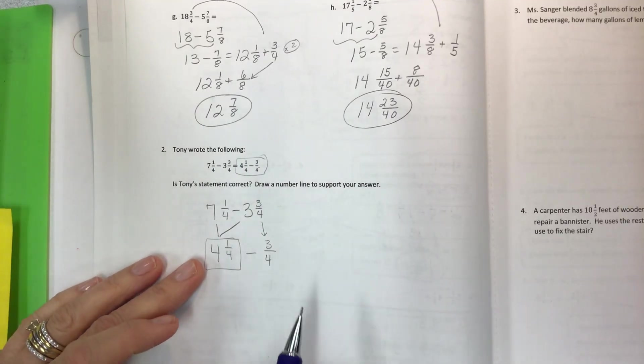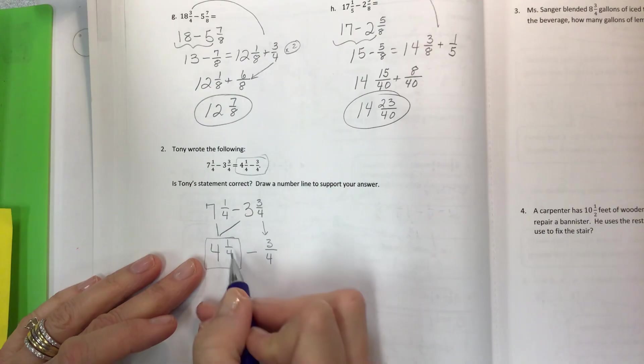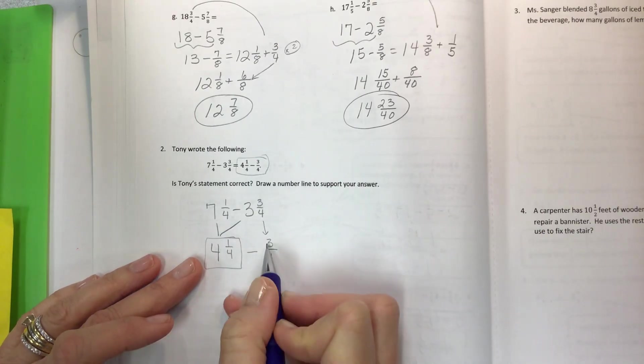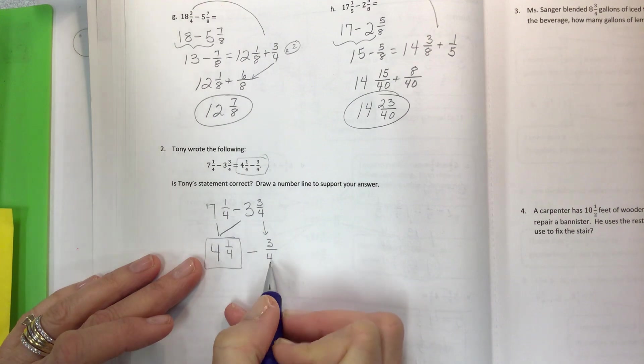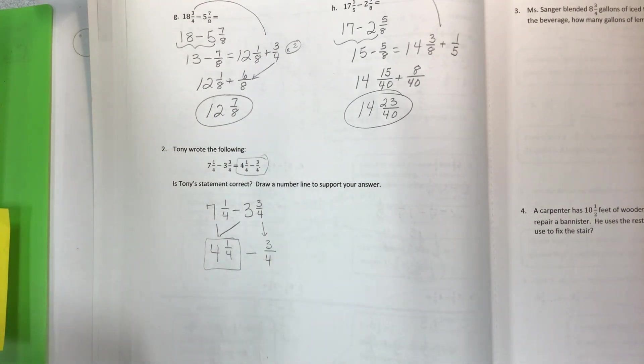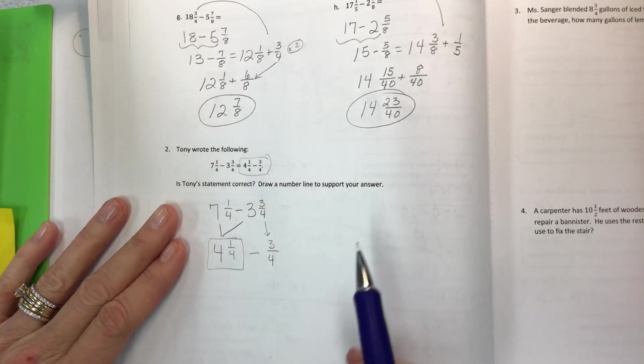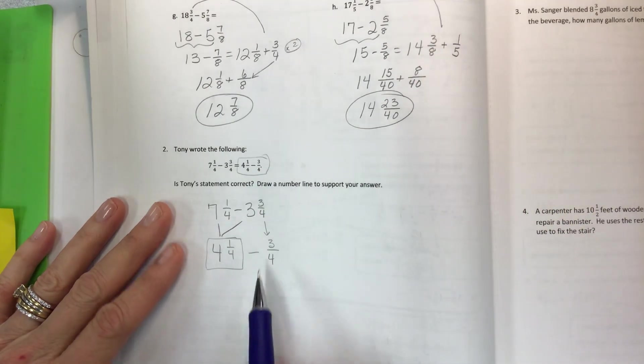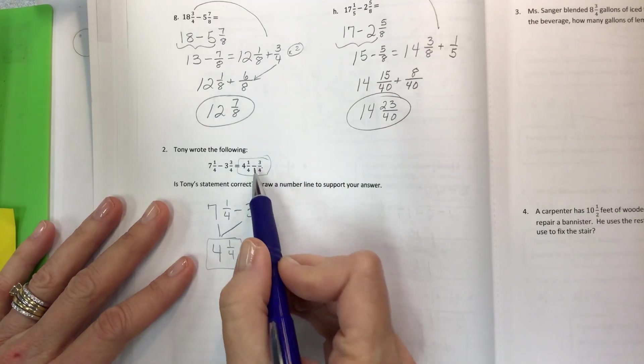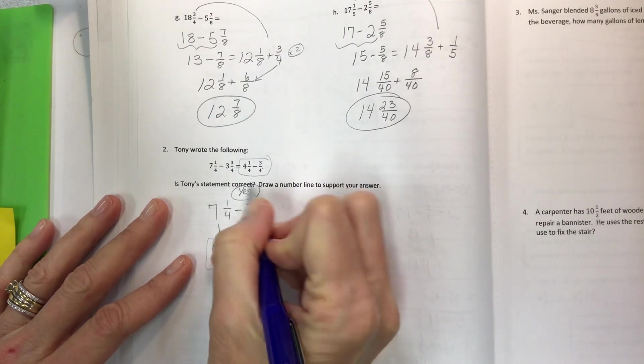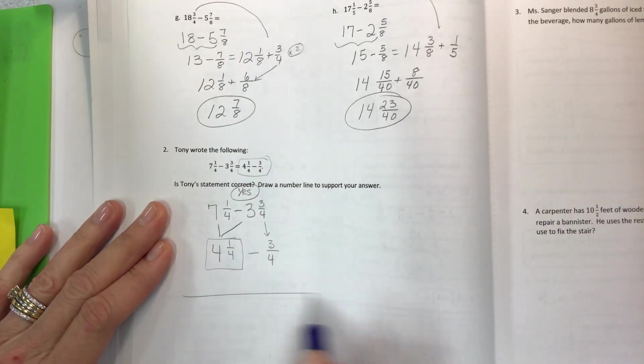Now you can certainly use this method on any of these problems or in the future on a test or whatever. You can just do the whole numbers first and then work on common denominators and doing subtraction. The problem with a lot of these was that the first fraction was too small to subtract the second fraction. So I didn't take you through that opportunity to kind of fail with this. I just said, hey, I know the easiest way and it's to take this whole thing. So anyway, is this correct? Yes, it is.